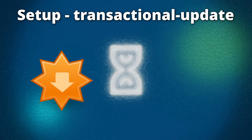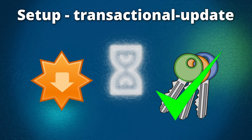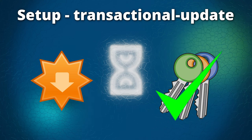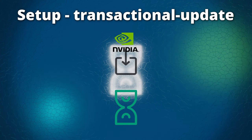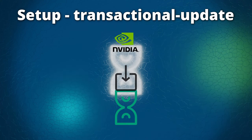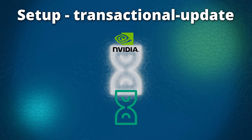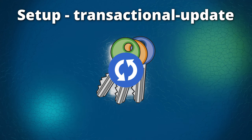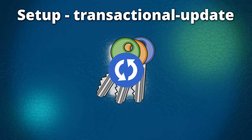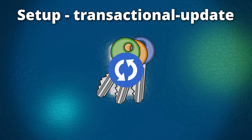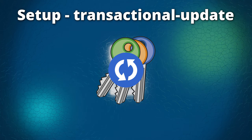This needs to be done so Transactional Update will auto-accept the NVIDIA driver repository keys, as the driver is downloaded from an official repository run by NVIDIA. It can also happen that NVIDIA updates their repository keys at any given time, which would otherwise break the auto-update process of EON without the user knowing.